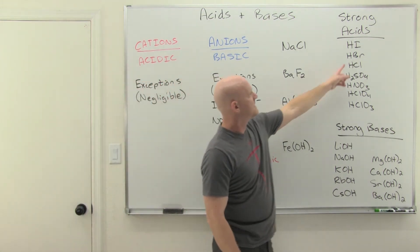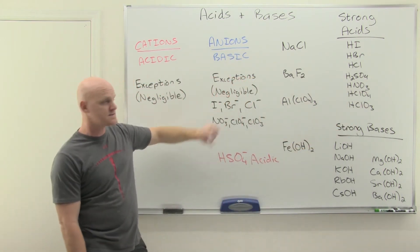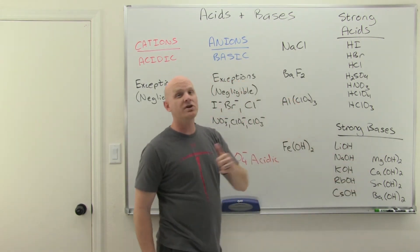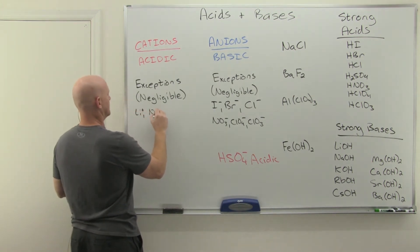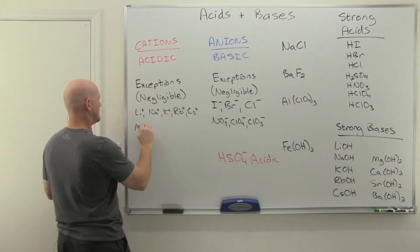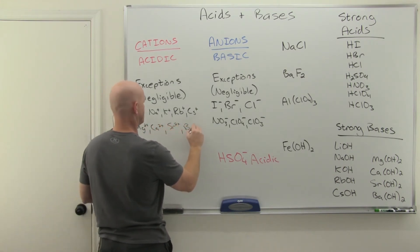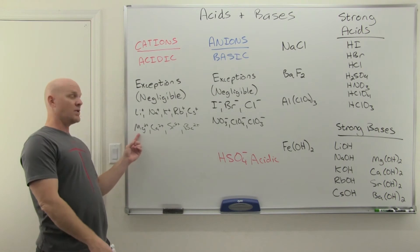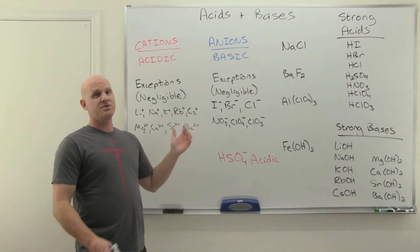Just like the conjugate bases of the strong acids, the anions associated with the strong acids are the negligible bases. The cations associated with the strong bases, the group ones and the group twos, those are going to be your negligible cations. In this case, we got lithium, sodium, potassium, rubidium, cesium, and then magnesium, calcium, strontium, barium. Cool. There's your exceptions.